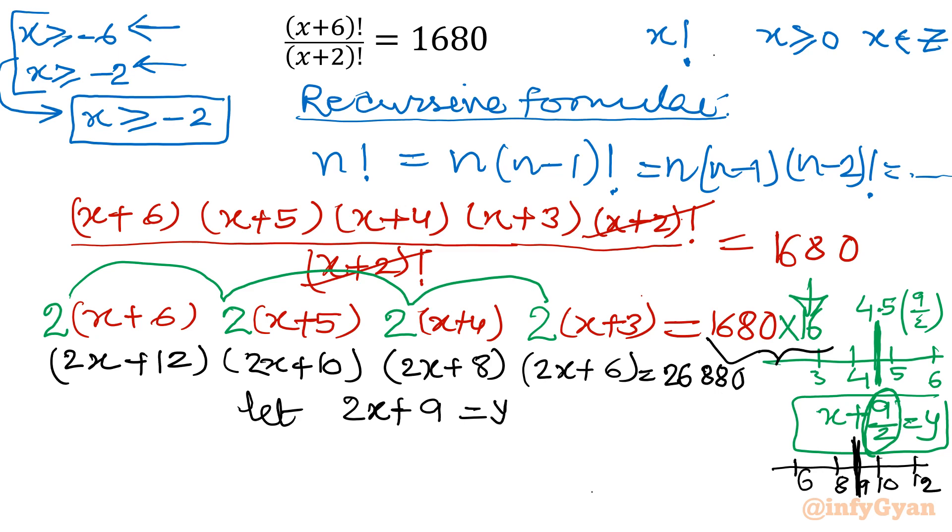Now I will give 2x+9 equal to y. So first bracket will convert to y+3. Second bracket 2x+10, so if I will add 1 to both sides I will get y+1. 2x+8 is y-1. 2x+6 is y-3. Equal to 26,880.